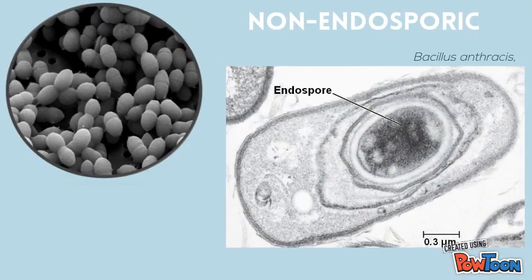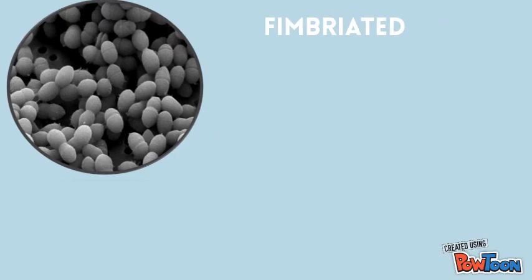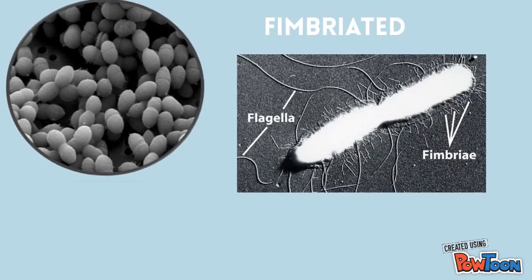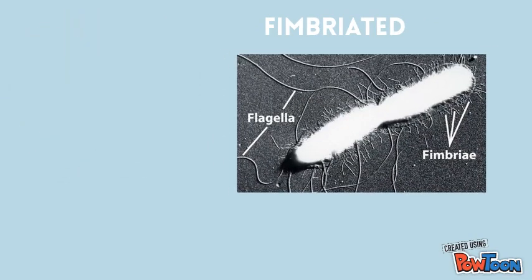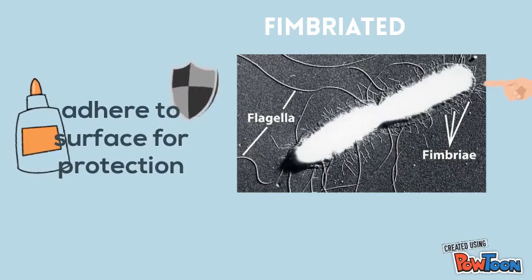Also, this bacteria does not produce endospores, even though it is characteristic of firmicutes. There are also bacteria that are fimbriated. This means that they have fimbriae. Fimbriae are composed of the same proteins as pili, but are shorter and thinner. They help the cell adhere to surfaces for protection.